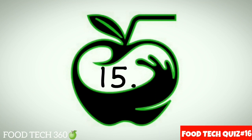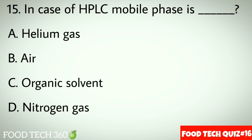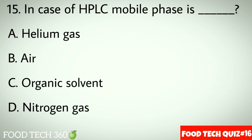Question No.15: In case of HPLC, mobile phase is dash. Options A: Helium gas. B: Air. C: Organic solvent. D: Nitrogen gas. Correct answer C: Organic solvent.